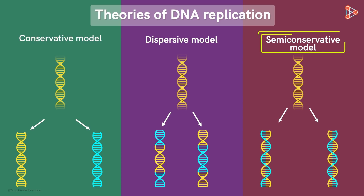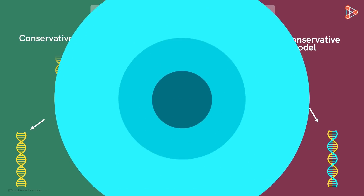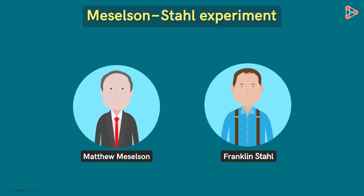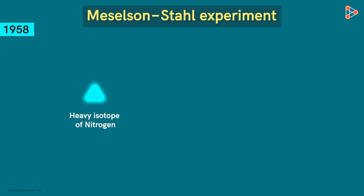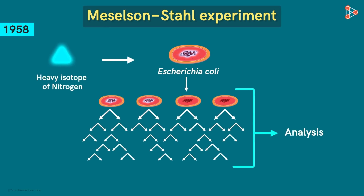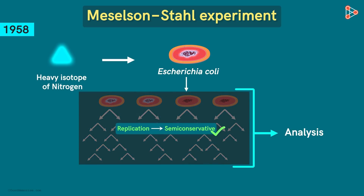This model was not accepted initially when put forth by Watson and Crick. However, one of the most amazing experiments in biology — the Meselson and Stahl experiment — helped crack this mystery. Two geneticists, Matthew Meselson and Franklin Stahl, carried out an experiment around 1958. They used a heavy isotope of nitrogen and inserted it into the DNA of the bacterium Escherichia coli. They obtained several generations of E. coli and analyzed each for the presence of DNA. The results confirmed that DNA replication in E. coli is indeed semi-conservative, which is how DNA replication takes place in almost all organisms.